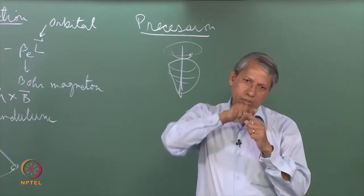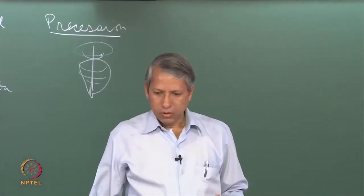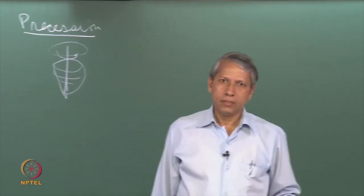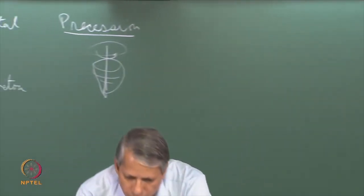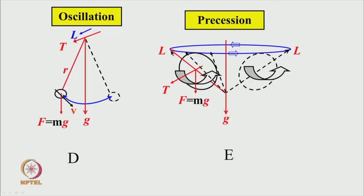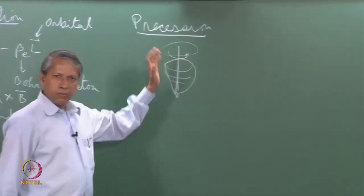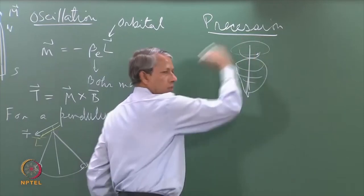Because the torque is acting in the perpendicular direction, it cannot change the magnitude of the angular momentum. All it can do is change its direction. So this red vector L now tries to move away in a perpendicular direction — it comes somewhere here, then here, then there. Effectively, the direction of the angular momentum vector follows a cone, and that is the horizontal motion we see when the top is spinning. So the axis starts moving — that is precession.